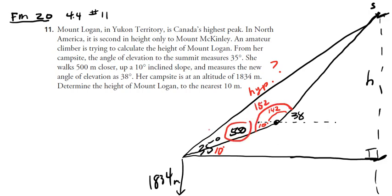We have 500 meters. 35 minus 10 is 25, so this is 25 degrees inside the triangle. Let me redraw that triangle for you. We have this triangle with angles 152 and 25 degrees, and side 500.